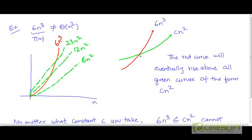So there will be some point, there will be some value of n, which we can call as n₀, beyond which the red curve will rise above any green curve we may choose to focus on.